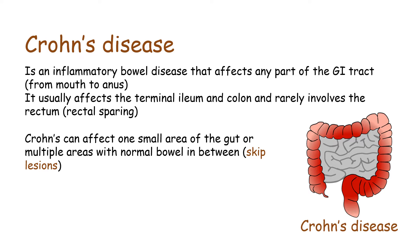Crohn's disease is an inflammatory bowel disease that affects any portion of the GI tract — literally from mouth to anus. However, it usually affects the terminal ileum and the colon, and will rarely involve the rectum, so there will be rectal sparing. Crohn's can affect one small area of the gut or multiple areas with normal bowel in between, which is called skip lesions.